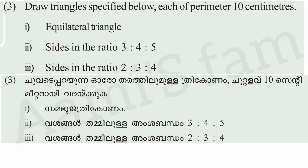The ratio of 2:3:4. If we measure the length of 10cm, we measure the length at ratio 2:3:4. Then we measure the length of 9cm and divide it and join it. We already said 3:3 rectangle. If you have any doubts, please check the next video.